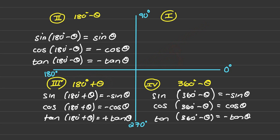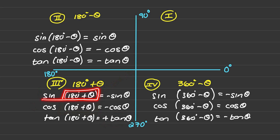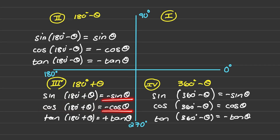In the third quadrant, tan is the only trig ratio that is positive, so tan(180 plus theta) reduces to positive tan theta. Sine and cosine are both negative in the third quadrant, so sine(180 plus theta) and cos(180 plus theta) both reduce to negative sine theta and negative cos theta.